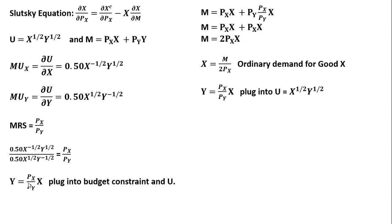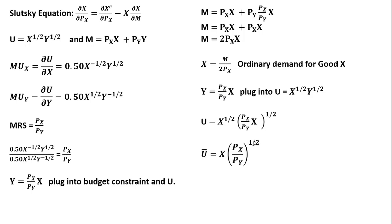Taking that same result, we now plug it into the utility function. Where we see y in the utility function, we plug in that result and solve for x, and that will be our compensated demand for good x.